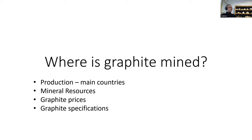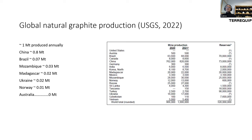Where is graphite mined? We'll go through quickly the main countries of production, mineral resources, prices, and specifications. These are the latest USGS figures — they've estimated about a million tons a year of natural graphite, which is a small market compared to things like iron ore. China is the world leader with roughly 70 to 80 percent of natural graphite production, followed by Brazil, with Mozambique a growing producer, and various other countries including Norway with an underground mine.